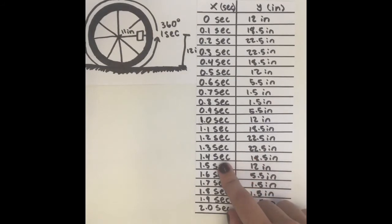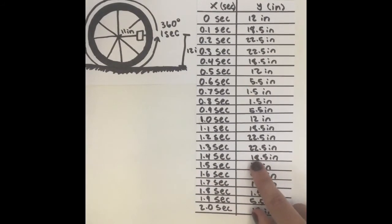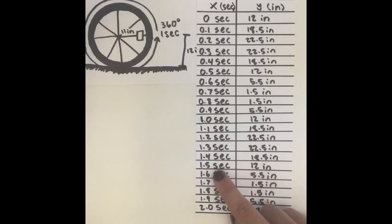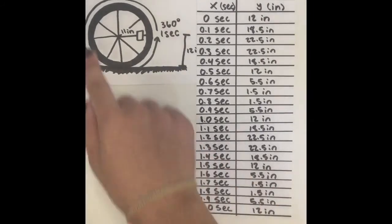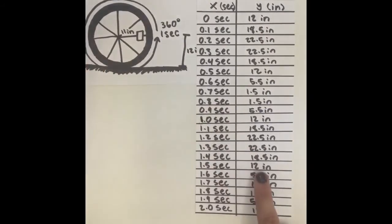At 1.4 seconds, the reflector is at 18.5 inches. At 1.5 seconds, the reflector has reached halfway across the wheel, so it is now right here and is at 12 inches again.